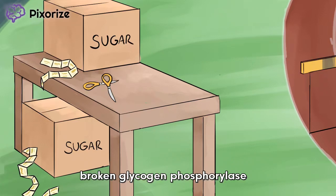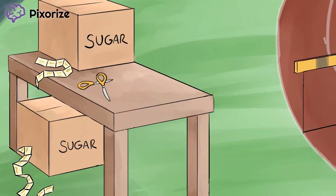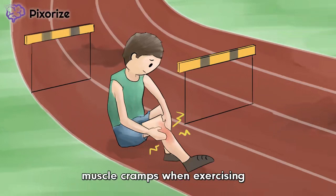Now let's shift gears and talk about these clinical findings. Take a look at this runner suffering from a leg cramp, clutching his leg in pain. We've drawn this here to help you remember that patients with McArdle disease develop painful muscle cramps when they exercise. This makes sense because your muscles normally break down glycogen into glucose to provide the energy needed in early exercise before increased blood flow could deliver more nutrients to the muscle.